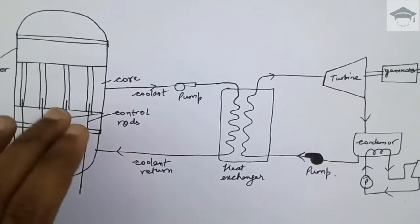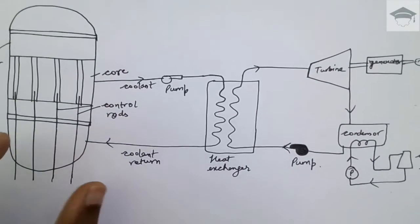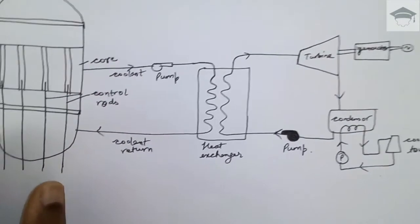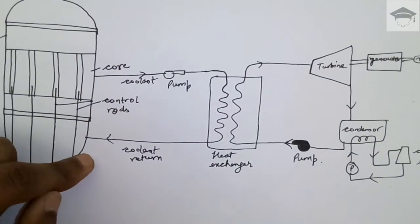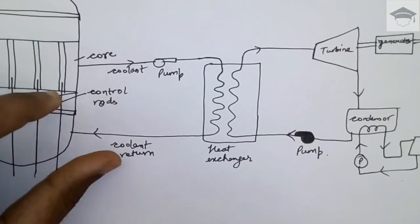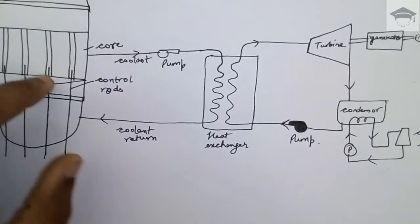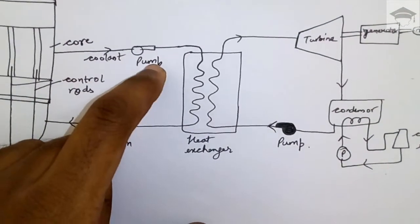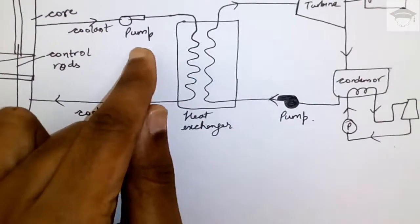Now this binding energy is in the form of heat. So a coolant, usually heavy water or water, is circulated through the reactor. It takes the heat. This coolant takes the heat from the reactor and it is pumped here. Now this is the heat exchanger. The heat from the coolant is passed to the second circuit.